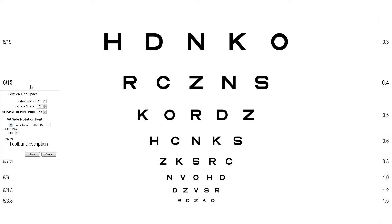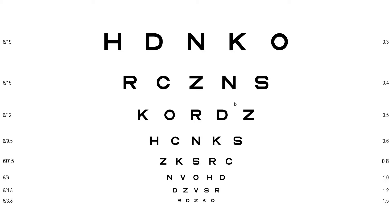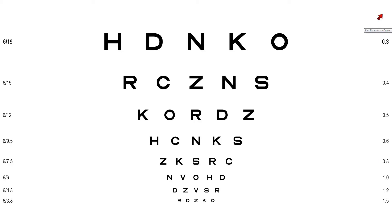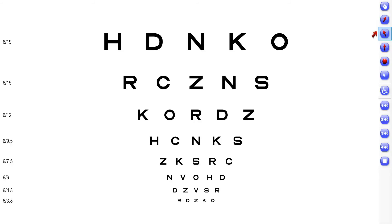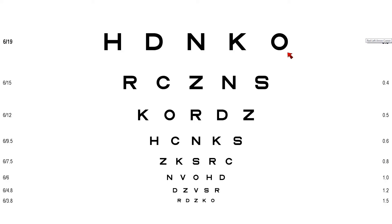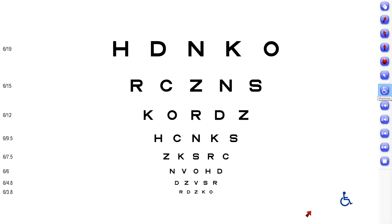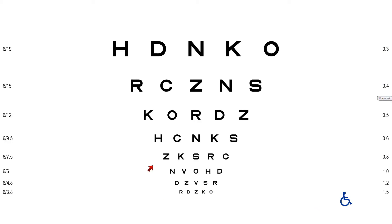If you hover your mouse pointer on the right hand side of the screen as indicated, you will notice another sub-menu where you are able to select a different mouse pointer and the wheelchair icon, which is useful when testing a patient who's in a wheelchair. When this is selected, it will automatically readjust the letter sizes to maintain accurate VA measurements.